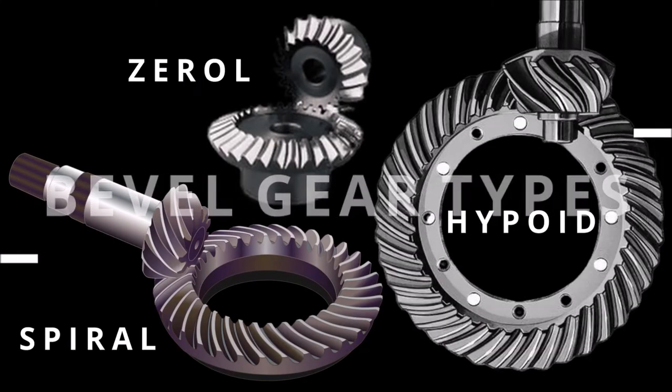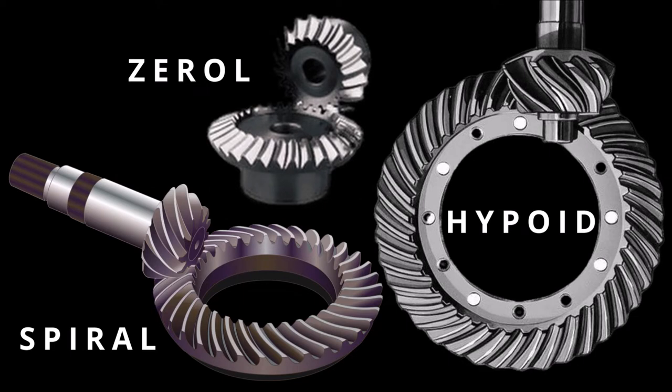Spur bevel gears are the simplest type of bevel gear. There are also other types including spiral, zerol, or hypoid.